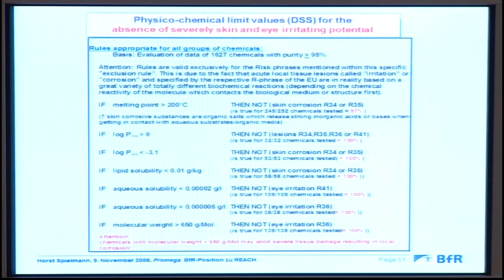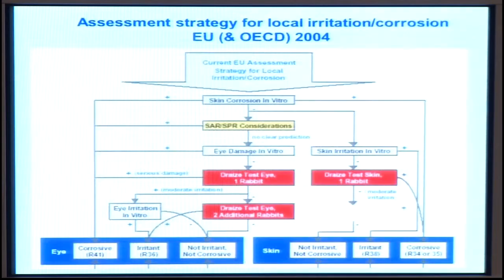As an example, physical-chemical data such as lipid solubility can give a yes or no decision — no testing needed, and so on. In 2004, this was the official testing strategy at the EU level: you did skin corrosion, then structure-activity, then eye irritation, and depending on the outcome, you proceeded to skin irritation testing — one rabbit for eye, one or two rabbits for skin. This was the sequential strategy for skin and eye, allowing classification as corrosive, irritant, or non-irritant.